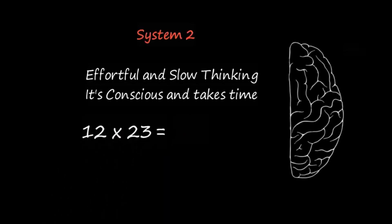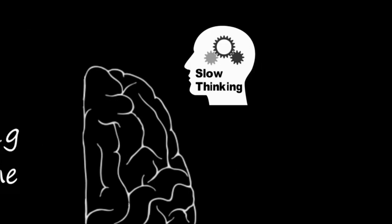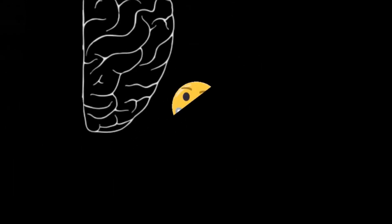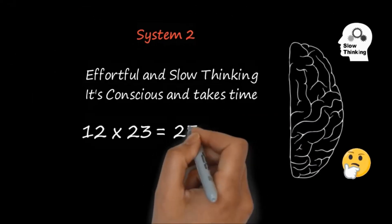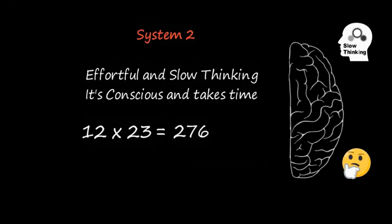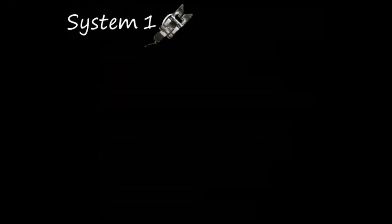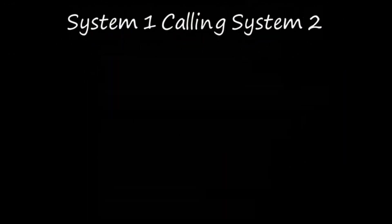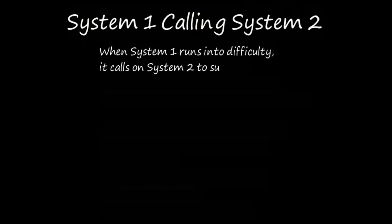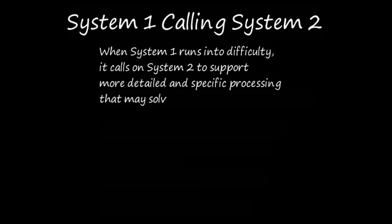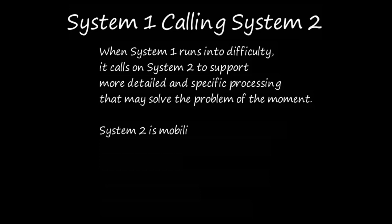The automatic operations of System 1 generate surprisingly complex patterns of ideas, but only the slower System 2 can construct thoughts in an orderly series of steps. I also describe circumstances in which System 2 takes over, overruling the freewheeling impulses and associations of System 1. You will be invited to think of the two systems as agents with their individual abilities, limitations, and functions.